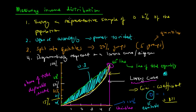In summary, measuring income distribution takes four steps and can be represented diagrammatically by the Lorenz curve, with the Gini coefficient providing the most pertinent numerical measure of income inequality in the economy.